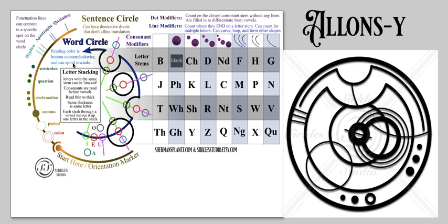So reading order is bottom counterclockwise, and you can spiral inwards. Here we have our first letter right at the bottom. These dots are not letter stems, they're just modifiers. A letter's position is where its stem is, and letter stems are these black lines or vowel stems are these colored lines here.